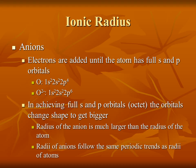Now let's look at anions — the negatively charged ions. To make an anion, electrons are added until the atom has full s and p orbitals. If you look at oxygen, it has 6 valence electrons, but the oxide ion — the oxygen ion with a negative 2 charge — has a full 8 electrons in its valence shell. In other words, it's isoelectronic with neon. Isoelectronic just means same electron configuration, same number of electrons. In achieving a full octet, the orbitals change shape to get bigger. The radius of an anion is much larger than the radius of the atom, and the radii of anions follow the same periodic trends as the radii of atoms.